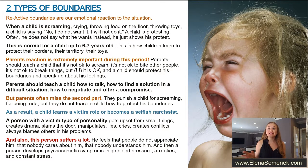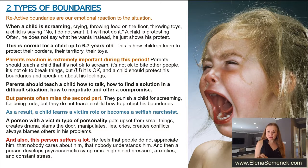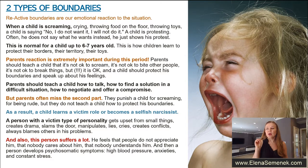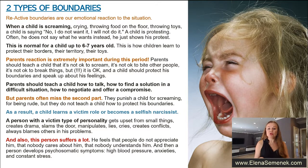For a child up to six or seven years old, this is how children learn how to protect their boundaries and their territory. Parents' reaction is extremely important during this period. Parents should teach a child that it's not okay to scream, not okay to throw food on the floor, not okay to break things, bite, or hit other people. But it is okay to say no. If you don't like something, you should say no, speak up, and not hurt other people.